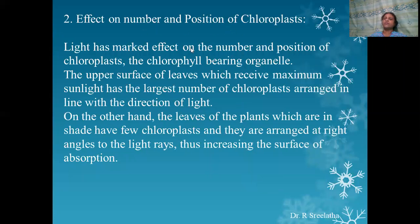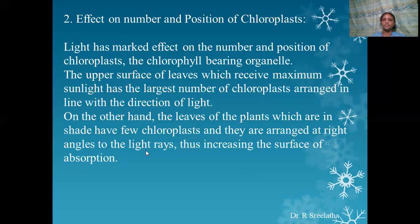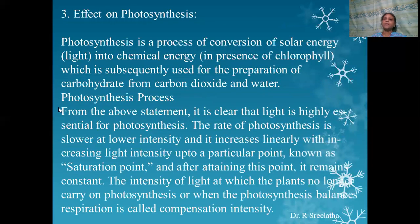Effect on the number and position of chloroplasts: light has a marked effect on the number and position of chloroplasts, the chlorophyll-bearing organelles. The upper surface of leaves, which receives maximum sunlight, has a large number of chloroplasts arranged in line with the direction of light. On the other hand, leaves of plants in the shade have fewer chloroplasts, and they are arranged at right angles to the light rays, thus increasing the surface area of absorption.